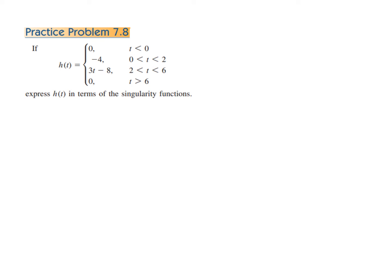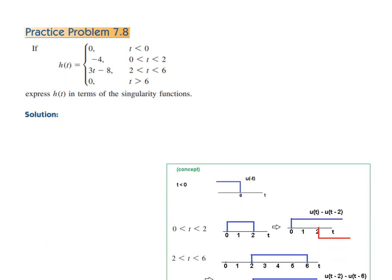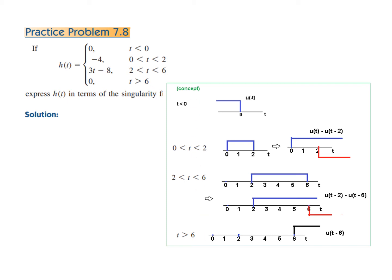The practice problem has 4 parts and we follow exactly the same technique, converting into singularity functions — primarily the step function and the ramp function. Converting time intervals: t < 0 uses u(-t); 0 to 2 is a gate u(t) - u(t-2); 2 to 6 is a gate u(t-2) - u(t-6); and t > 6 uses u(t-6).